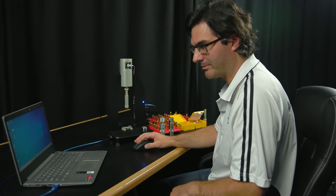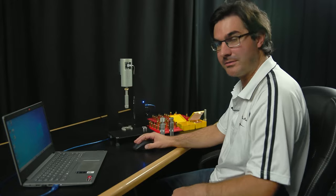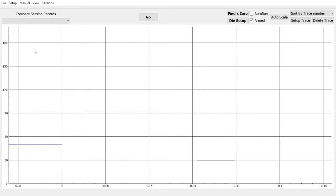First of all, we want to open the AMP press app on the computer. The press will be automatically detected. In this case it'll ask you, do you want to connect? We want to click OK.